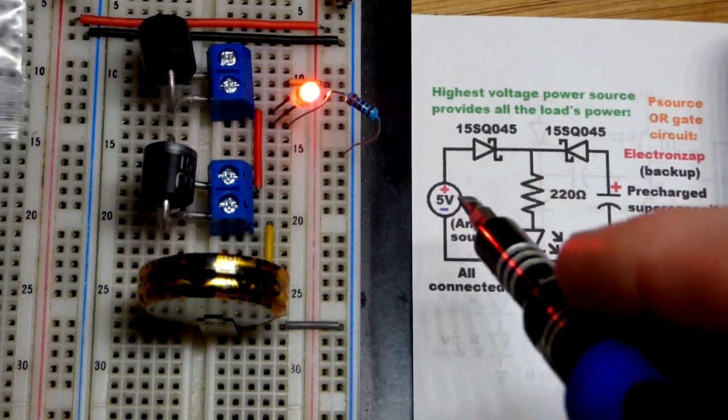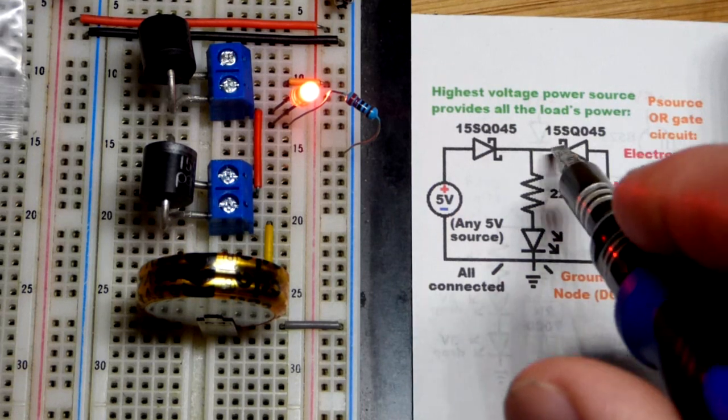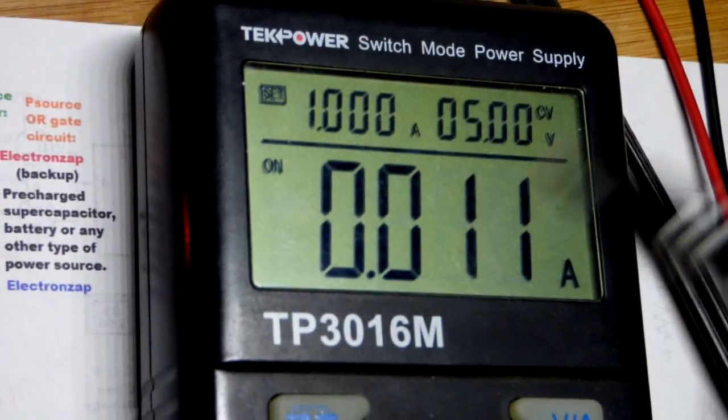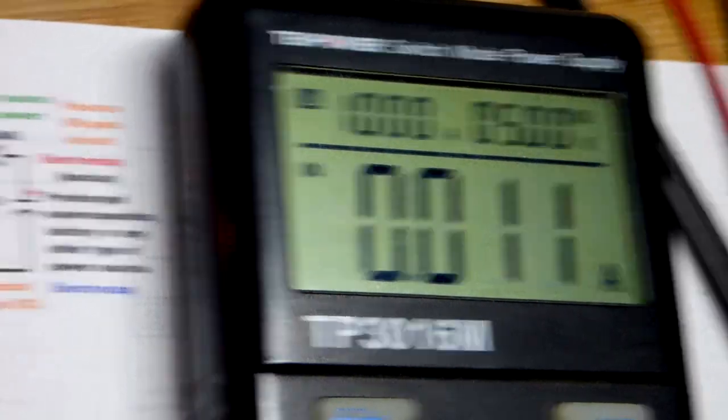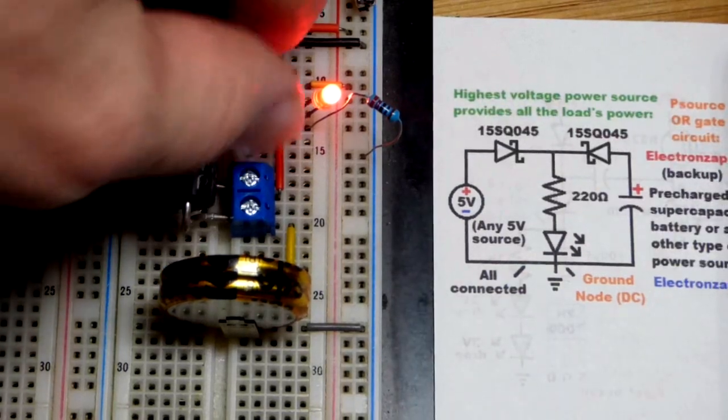So now in this video we have a power supply powering a circuit plus a backup power supply. They're basically completely separate right here. We have about 11-12 milliamps of current going through the LED at the moment being provided by the power supply.